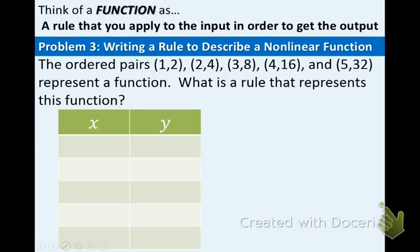We're going to write an equation that describes a nonlinear function. We are given the ordered pairs (1, 2), (2, 4), (3, 8), (4, 16), and (5, 32). They represent a function. What is a rule or equation that represents this function? The easiest way to organize this information is to make a table of the x and y values. Take a moment to fill in the table on your note sheet, and we will continue.